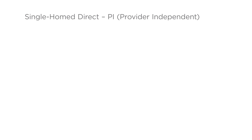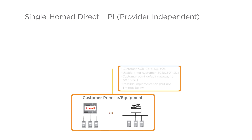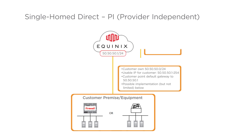Single-home direct PI, or provider independent, is the most common configuration for out-of-band applications. This is the same as the previous example, except that the customer wants to use their own subnet and does not want to run BGP. Equinix has to originate the prefix subnet. Note that the customer's own subnet has to be greater than or equal to a slash 24.